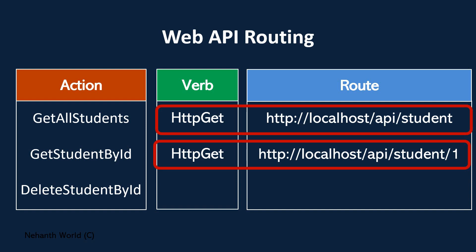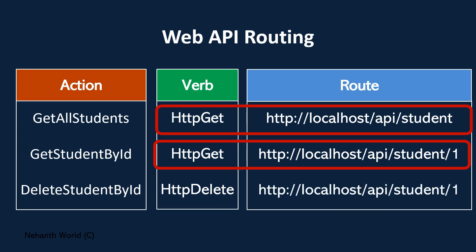The next action is 'Delete Student By ID'. The 'Get Student By ID' fetches a student based on the ID and returns their details. But 'Delete Student By ID' finds the student based on the ID and deletes them. The verb for this action is HTTP DELETE. If you notice, the URI is the same as 'Get Student By ID' — 'api/student/1'. So whether you get or delete the student depends on which HTTP verb you are using.